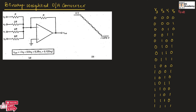We need to follow this pattern. If we have a fifth input, we connect a resistor with value 16R. If we have a sixth input, the resistor value should be 32R. The output of this digital to analog converter is: minus of (V3 plus 0.5·V2 plus 0.25·V1 plus 0.125·V0).